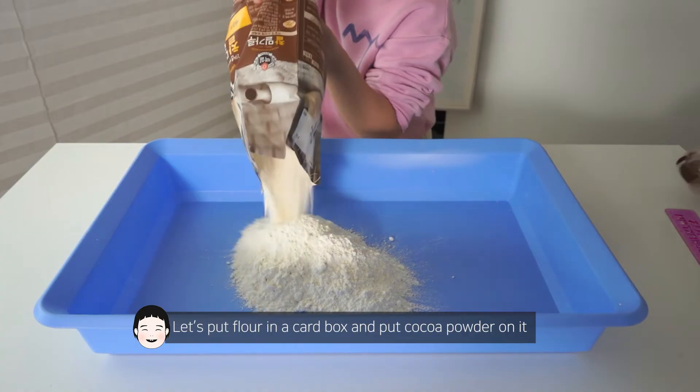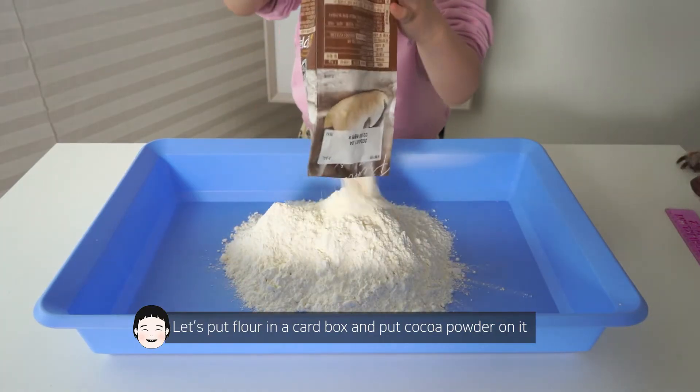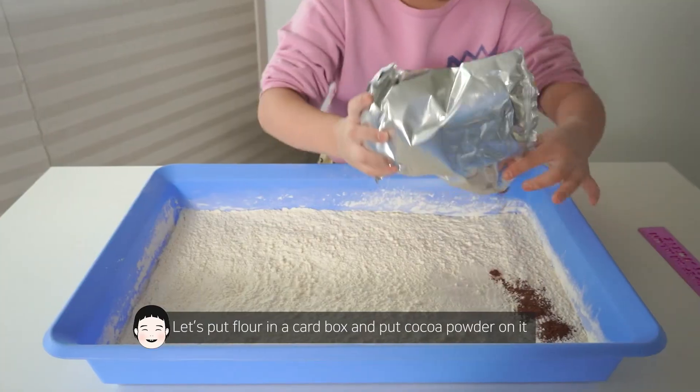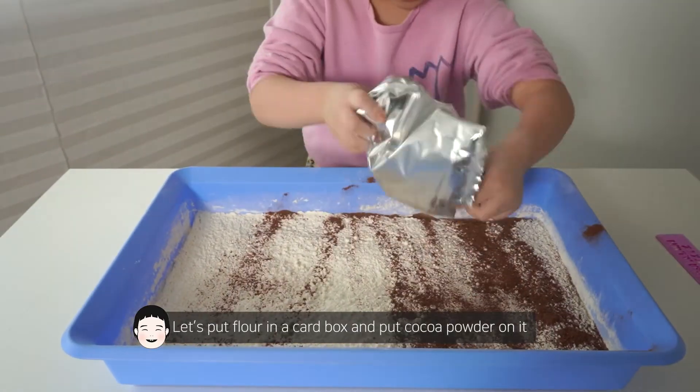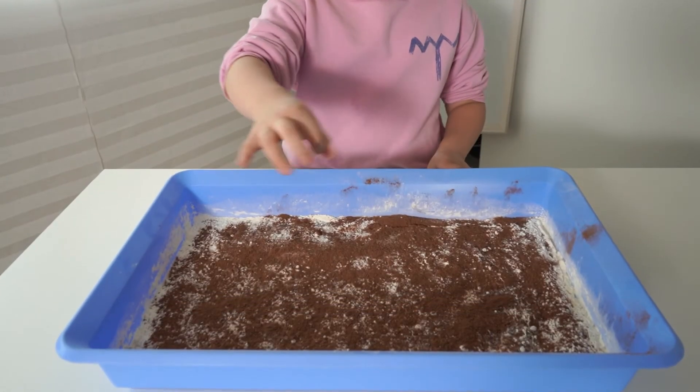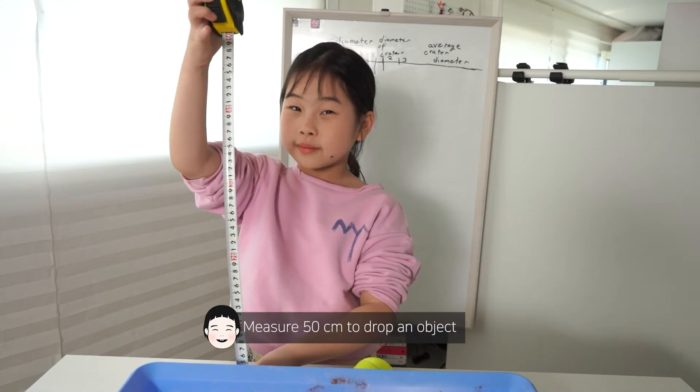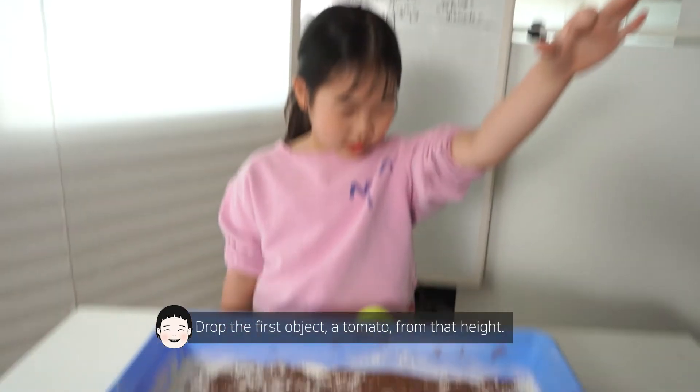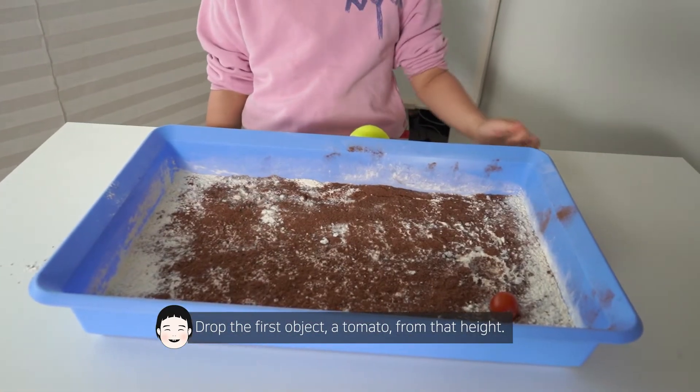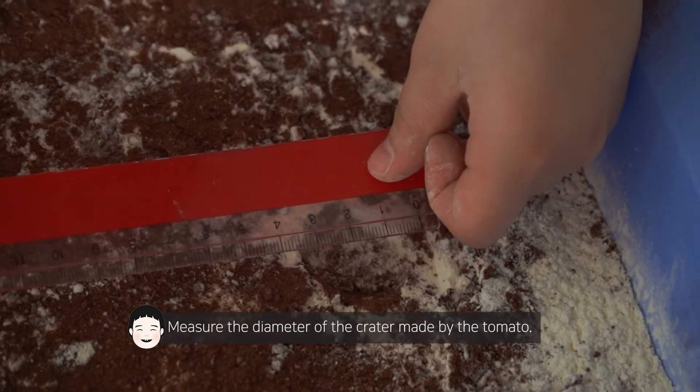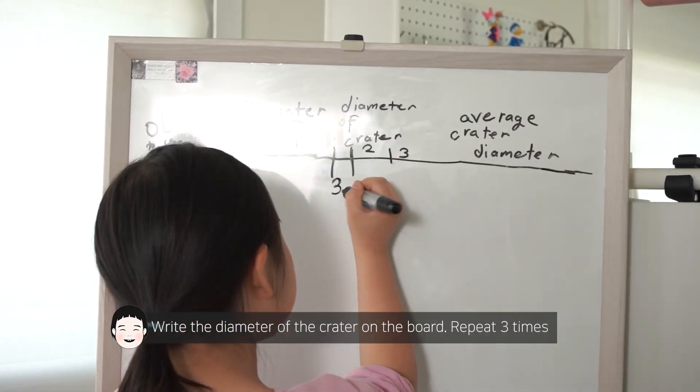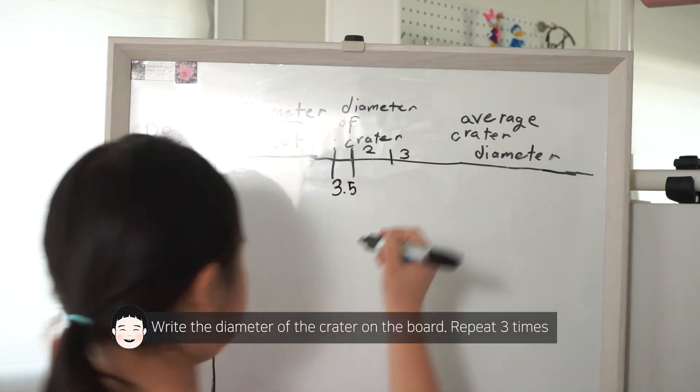Let's put flour in the cardboard box and put cocoa powder on it. Measure 50 centimeters. Drop the first object, a tomato, from that height. Measure the diameter of the crater made by the tomato. Write the diameter of the crater on the board three times.